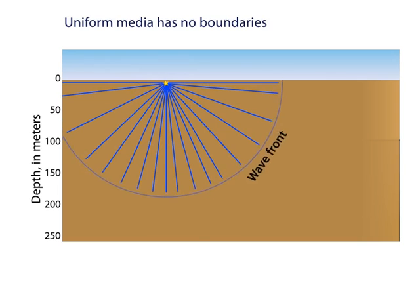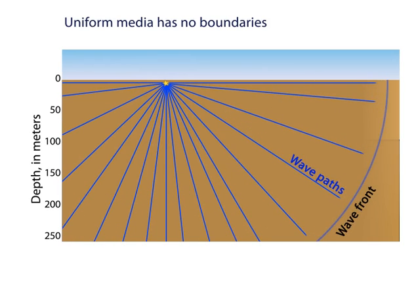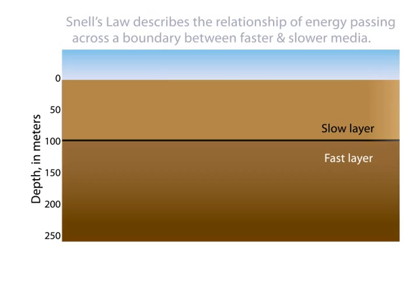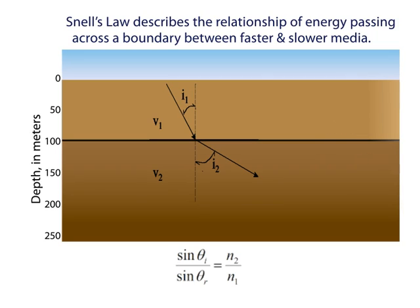In a uniform medium, they would travel straight paths away from the source. But what happens if they hit a boundary between faster and slower layers? Waves react at the boundary according to Snell's law, such that when energy arrives at a boundary, some of the energy refracts in the lower layer to speed up or slow down, depending on the media.